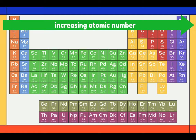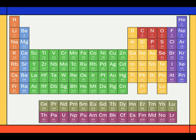The elements are arranged from left to right by increasing atomic number. It means that as you go from left to right, each element has one more electron and one more proton than the element to the left of it. For example, hydrogen has one electron, helium has two electrons, and lithium has three electrons, and so on.